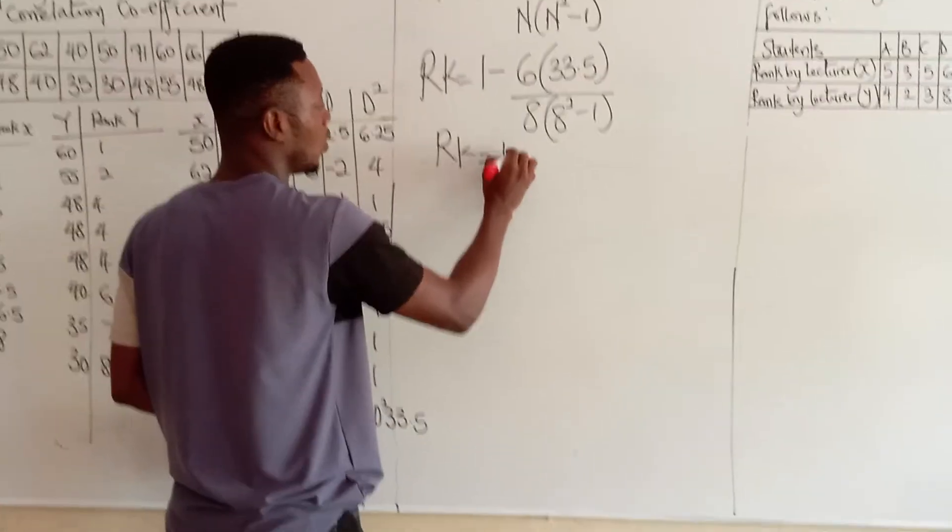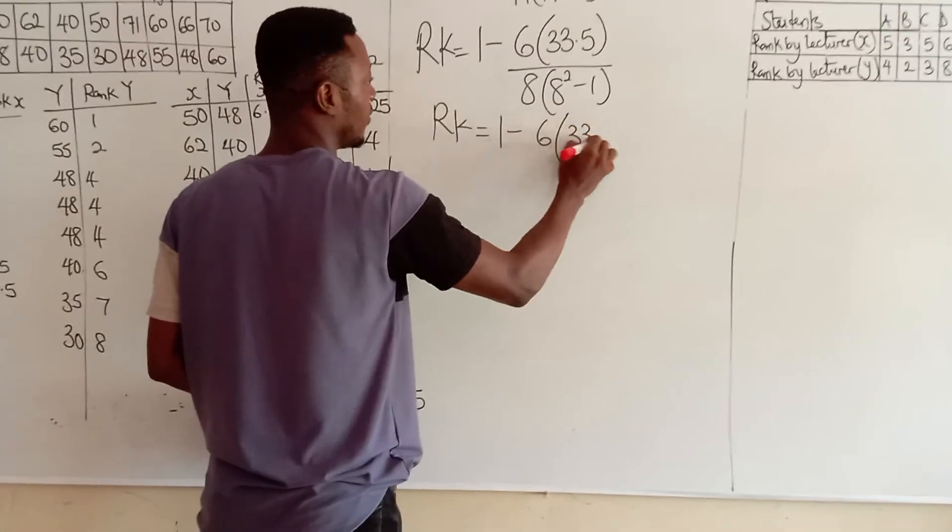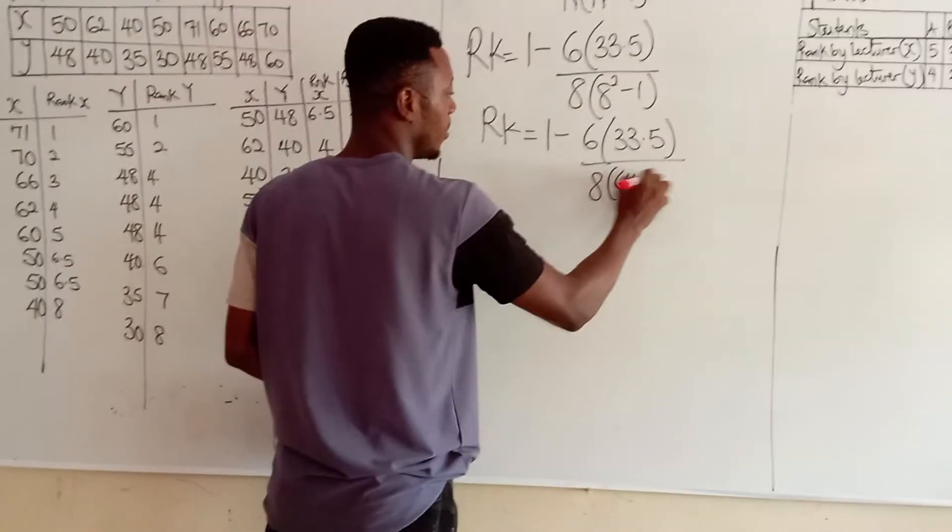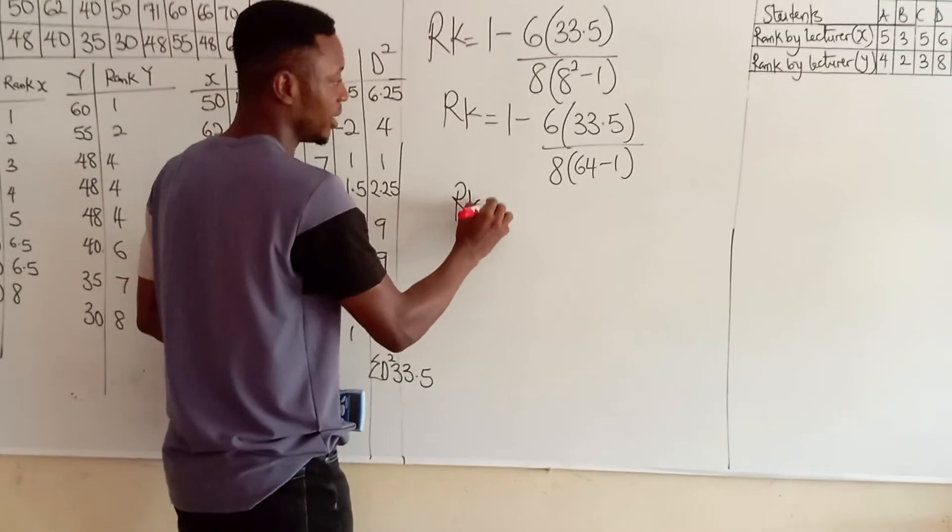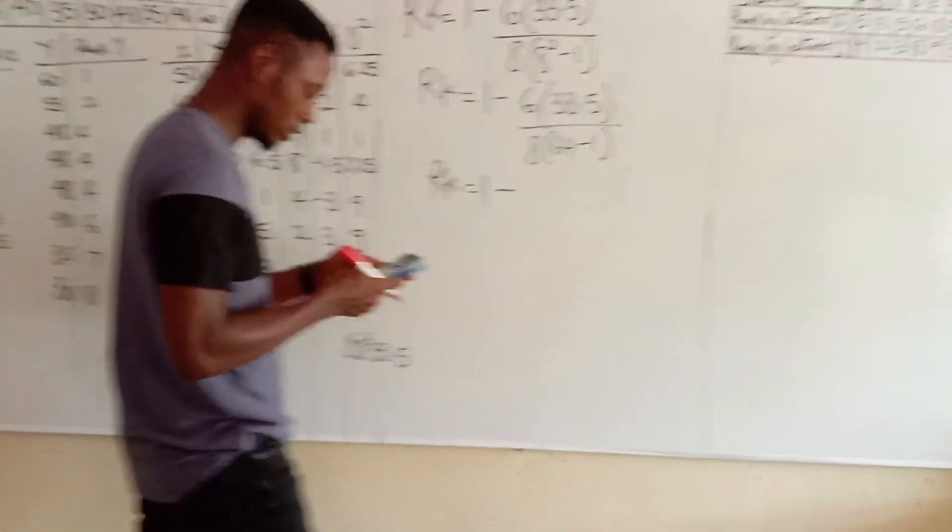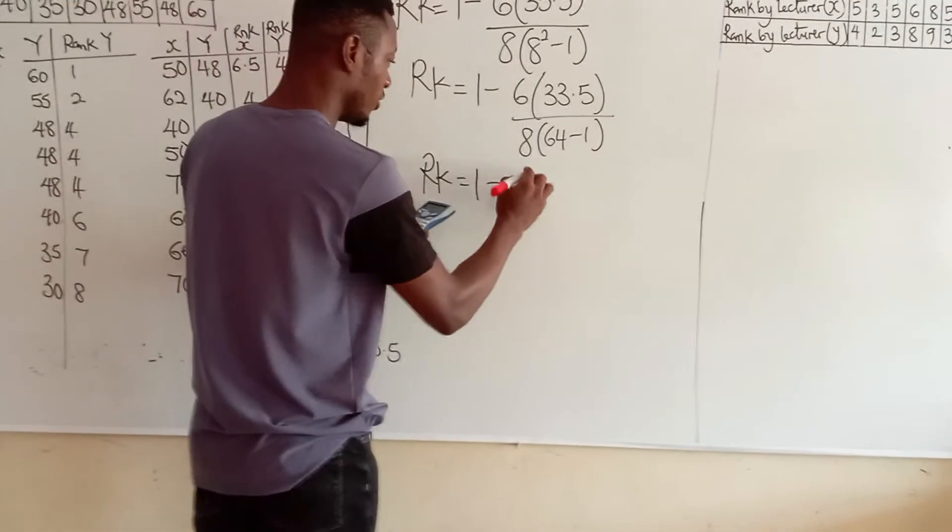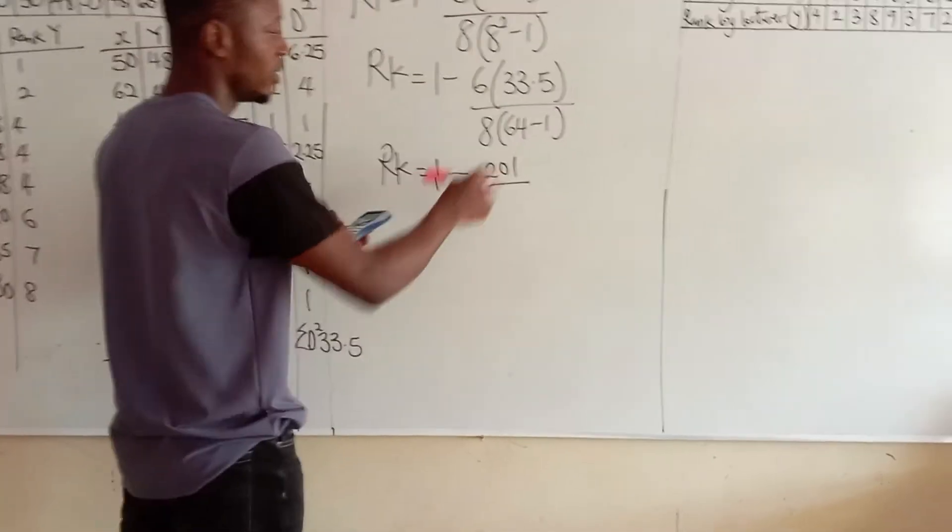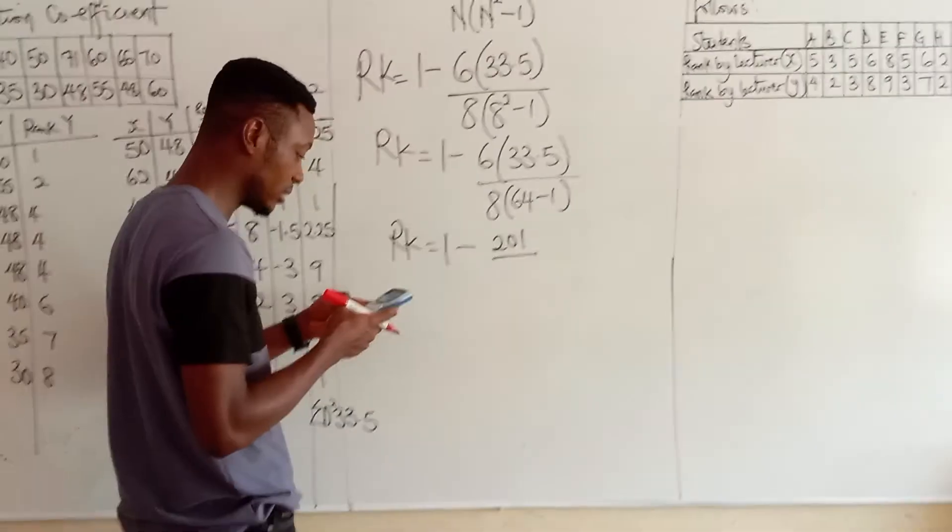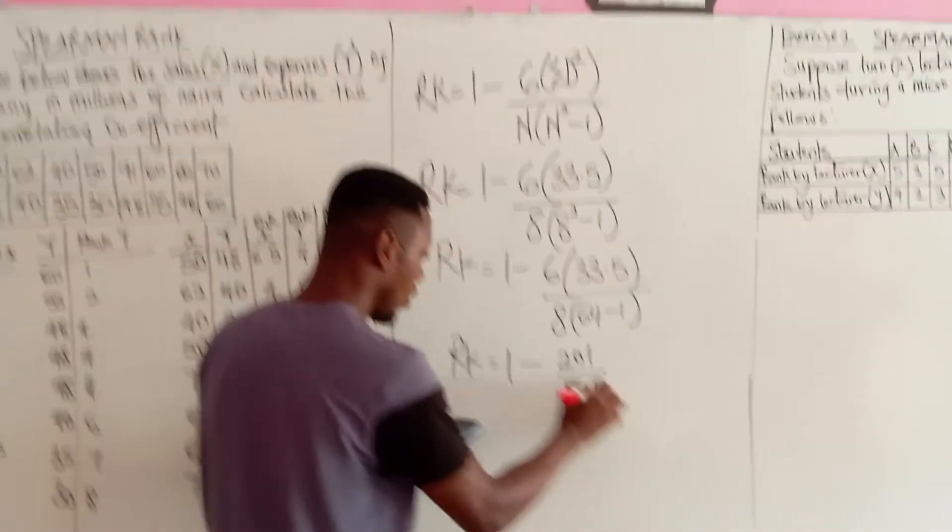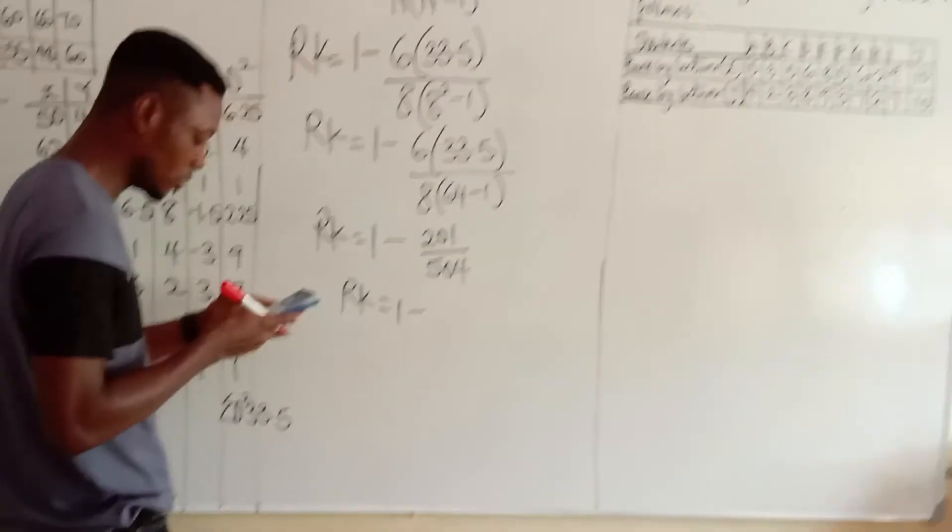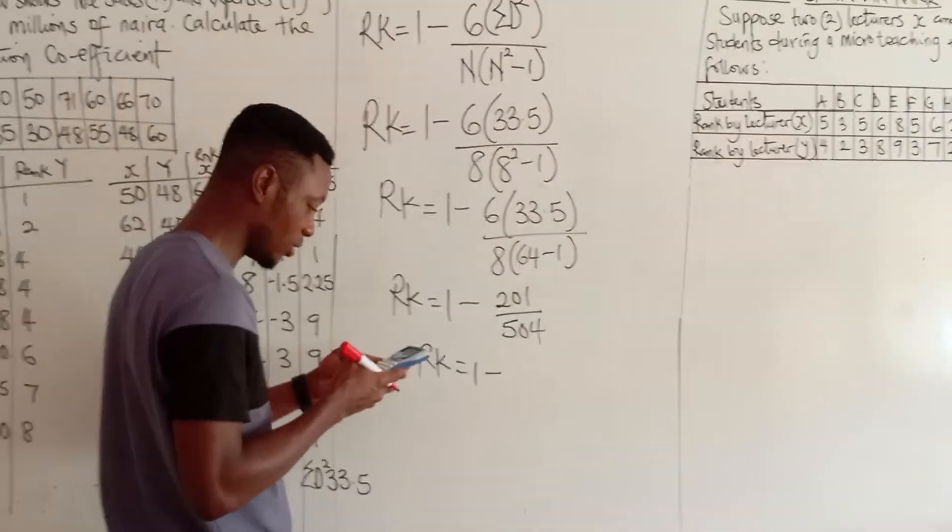Now, this will give me rank is equals to 1 minus 6, open bracket, 33.5, close bracket, divided by 8. 8 squared is 64 minus 1. So, rank will give me 1 minus 6 times 33.5, which gives me 201, divided by 64 minus 1, which is 63. 63 multiplied by 8 is 504. So, we have rank is equals to 1 minus 201 divided by 504. It gives us 0.3988.